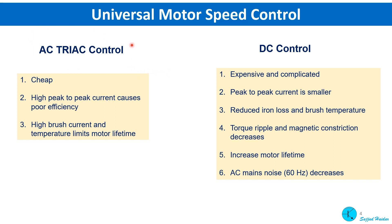For AC TRIAC control, it is cheap, but the high peak current causes poor efficiency, and high brush current and temperature limits the motor lifetime. On the other hand, the PWM control is a little more expensive and complicated, but the peak-to-peak current is smaller, iron loss and brush temperature are reduced, torque ripple and magnetic constriction decrease, and motor lifetime increases. Additionally, AC mains noise will decrease.